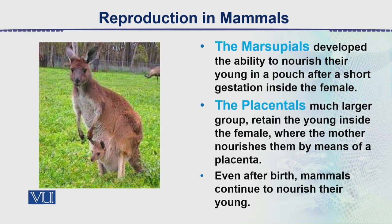These are the marsupials. They develop the ability to nourish their young in a pouch after a short gestation inside the female. Their gestation period is very short — uterine stay is very brief — and that is why they give birth to very weak young ones. Further development takes place within the pouch, which is an outpocketing of skin.